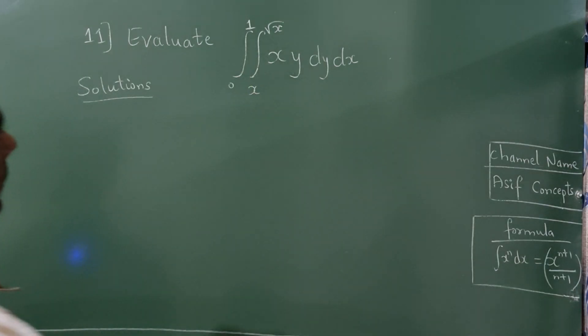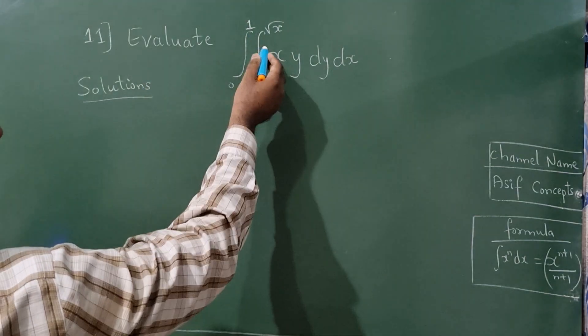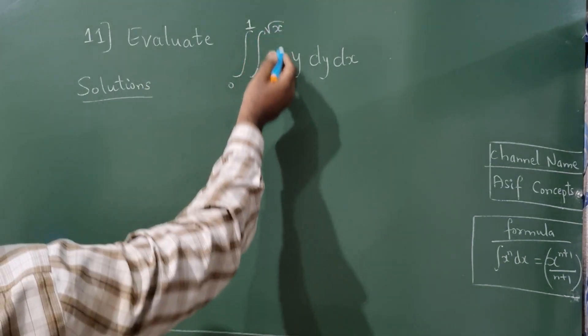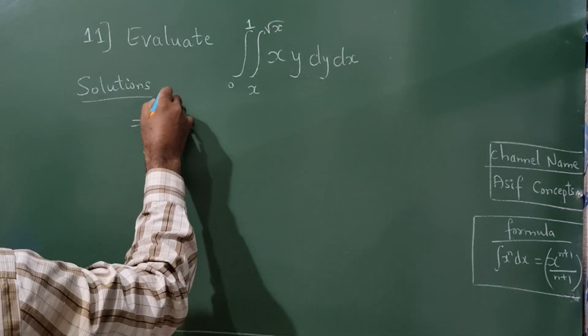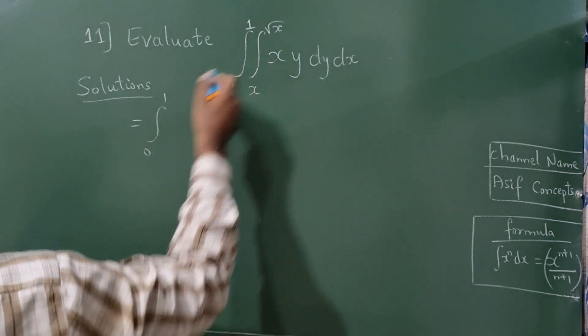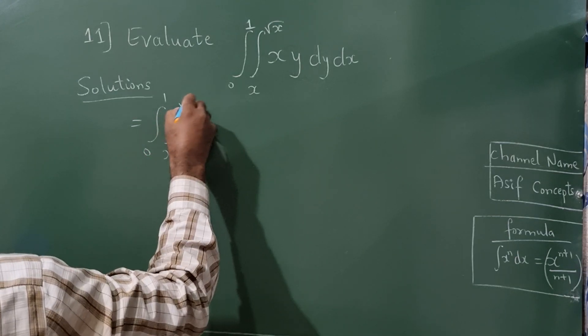Now this is a double integration method. Evaluate the integration from 0 to 1, and again integration from x to root x of x y dy dx. First, write 0 to 1 as it is, then write again x to root x.